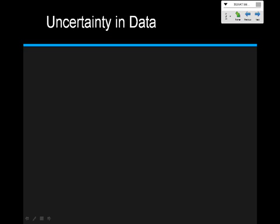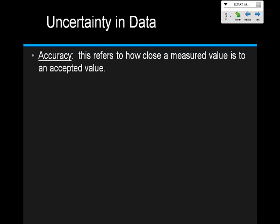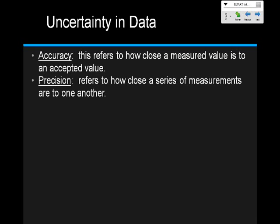All right, we need to talk about one more thing: uncertainty in data. Accuracy tells us how close we are to an accepted value. Precision tells us how close a series of measurements are to one another. Another way to use the word precise: if I measure something like 4.156, that's a more precise measurement than 4.1 — the further you go past the decimal, the more precise the measurement. When several trials are all close to one another, that is also considered precise.